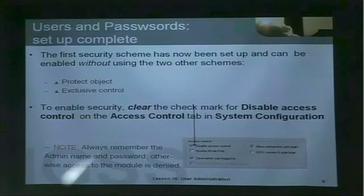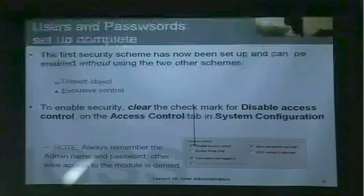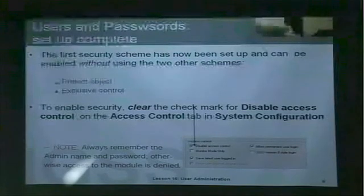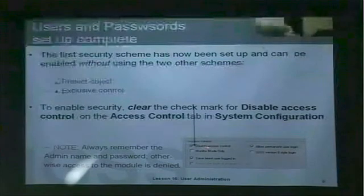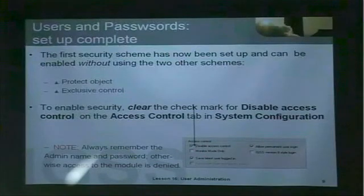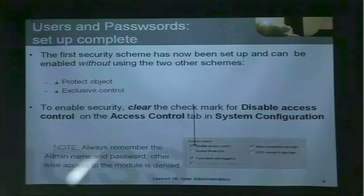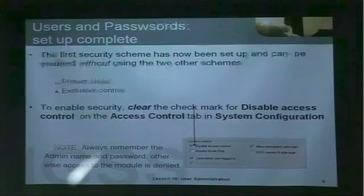After we configure all of our users, we are ready to use the security scheme. We do not have to configure the protect object level or the exclusive control level to be able to protect the configuration. One more thing to remember before using the user administration security module: go into the system configuration module, go to the access control tab, and remove the check mark that says disable access control. And remember to keep the password for a member of the admin group — otherwise, it will be impossible to come into the user administration module and alter settings.